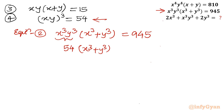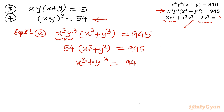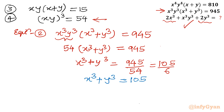I am targeting the term x³ + y³. From 54(x³ + y³) = 945, I get x³ + y³ = 945 ÷ 54. Solving this gives x³ + y³ = 105/6.